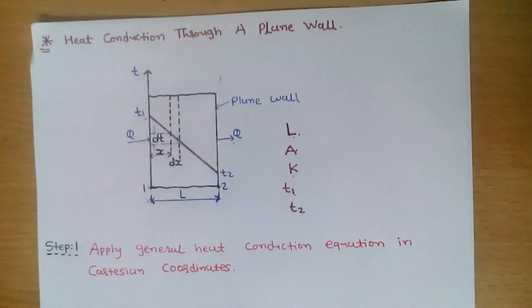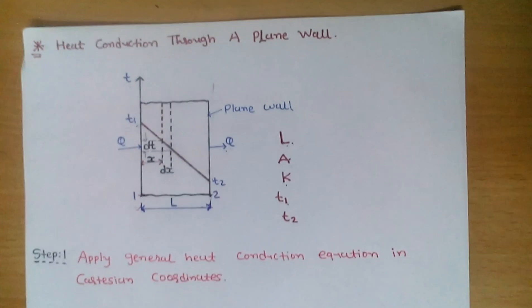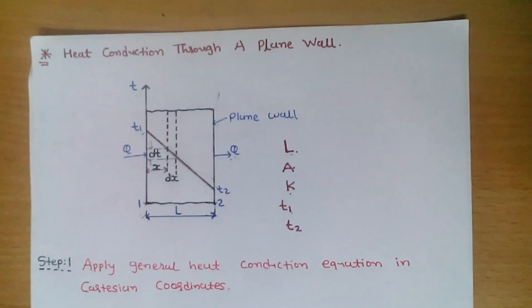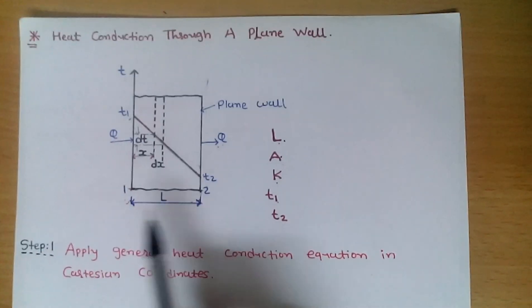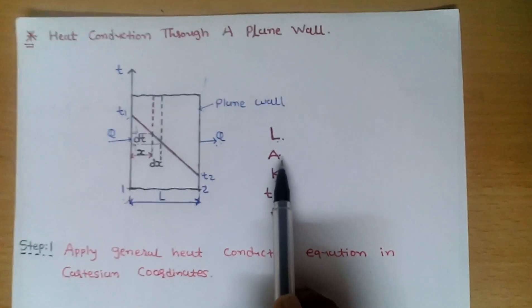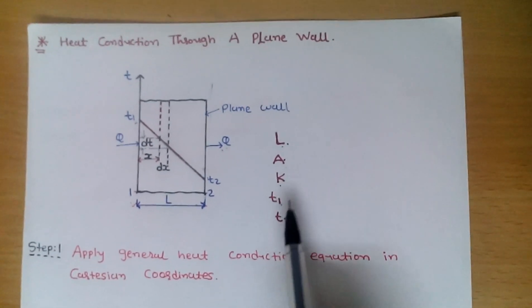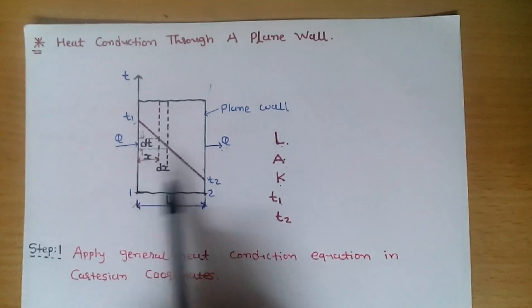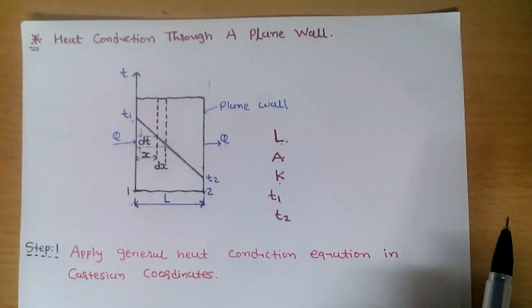Hello friend, today we discuss about heat conduction through a plane wall. First we define terms: L means thickness of the plane wall, A means cross-sectional area of the wall, K means thermal conductivity, T1 means temperature maintained at phase 1, and T2 means temperature maintained at phase 2.